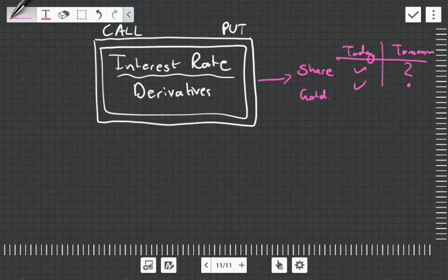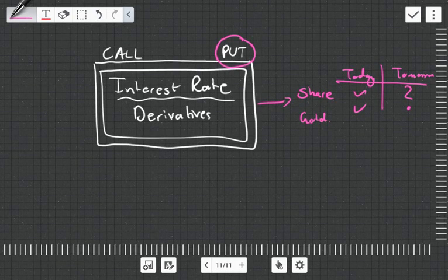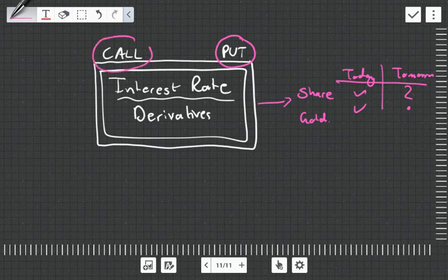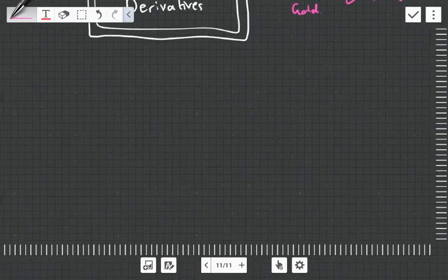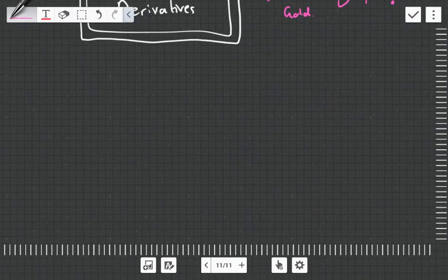If I have a share and want the option to sell it, I'll purchase a put option which gives me the right but not obligation to sell. If I want to buy some gold tomorrow and lock in the price today, I'll use a call option. However, I assume you're quite comfortable with finance, so let's get straight into the nitty-gritty of interest rate derivatives.